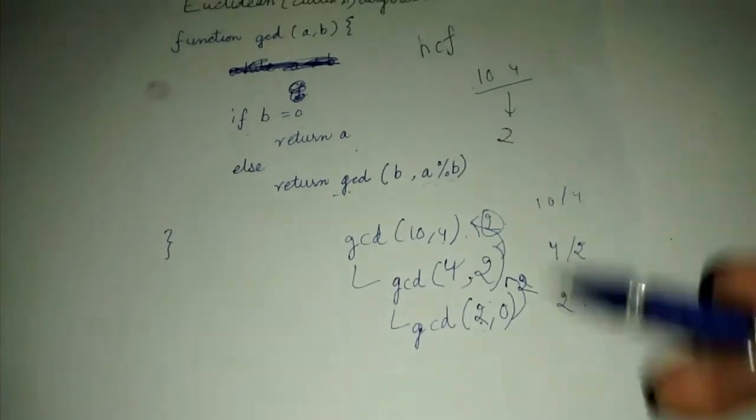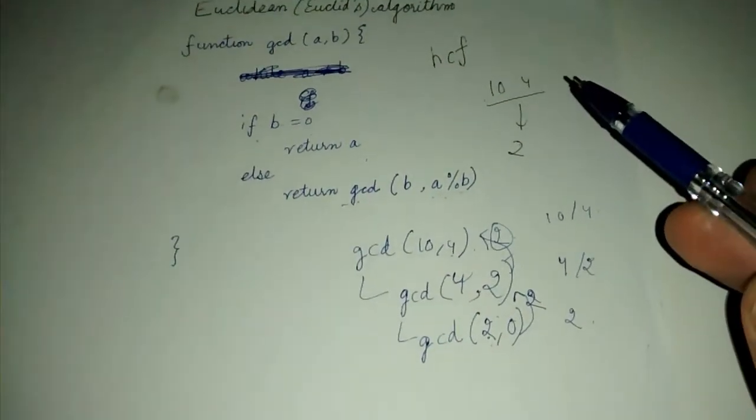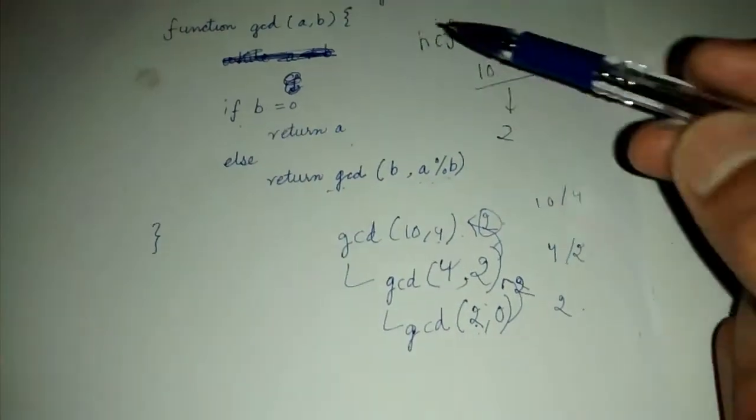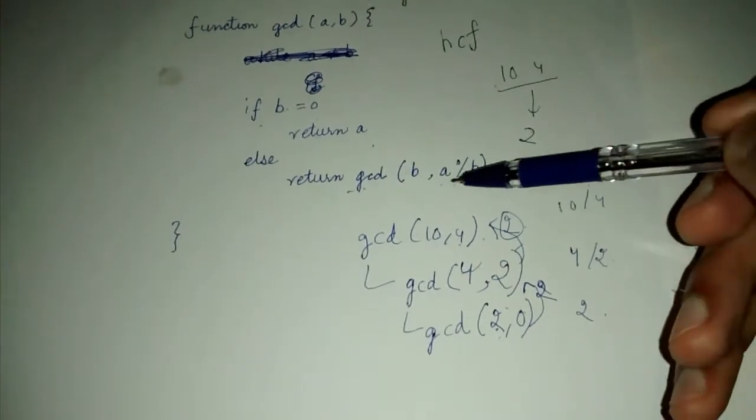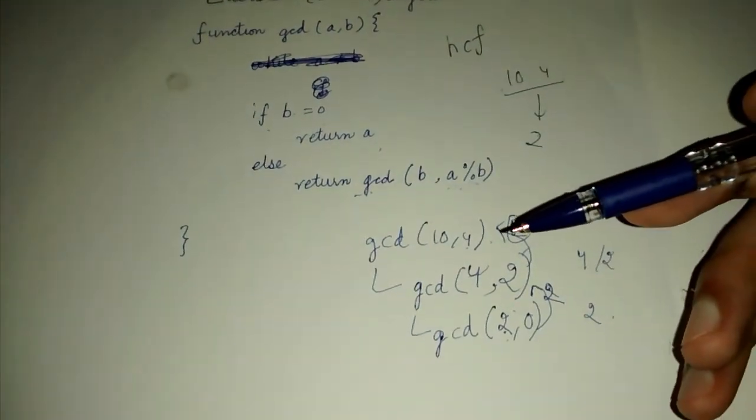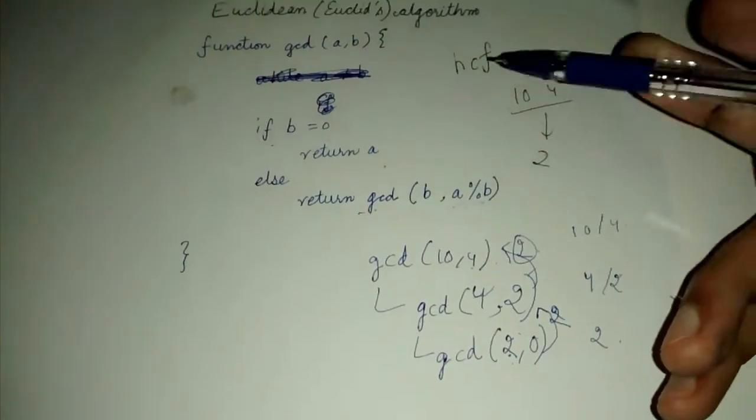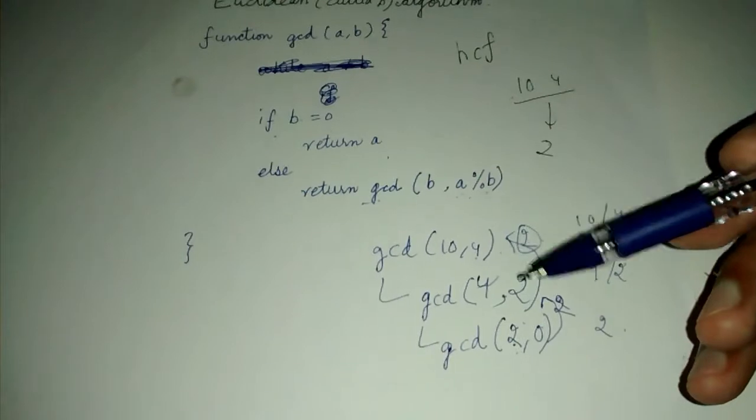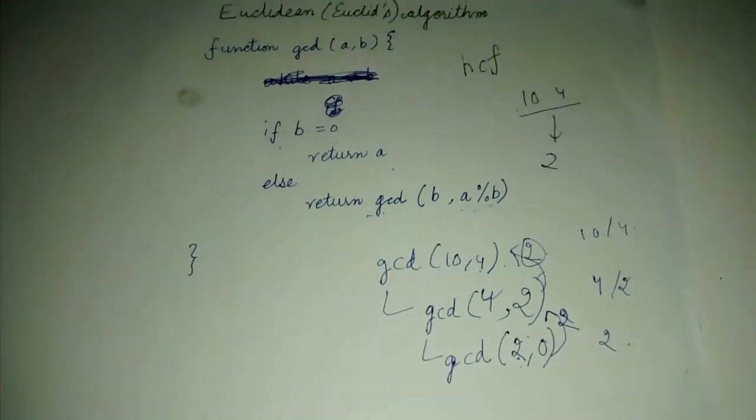So this is a simple implementation of Euclid's algorithm using division because we are dividing here. There are other possible implementations using subtraction etc. But this is a pretty simple one. So I have explained this.